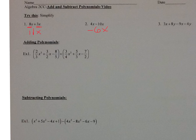And the same thing on number three — we're only looking to combine the like terms. That's 3x and negative 9x, so negative 3x minus 9x is negative 6x. And positive 8y: 4y minus 4y is positive 4y.